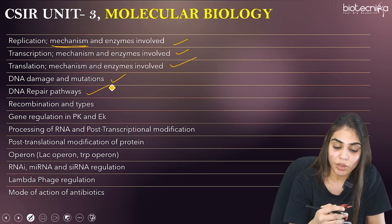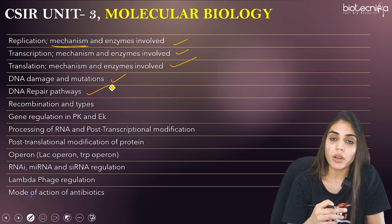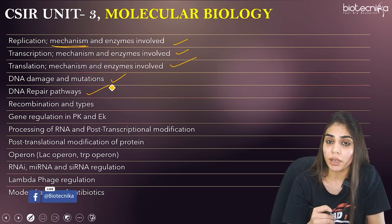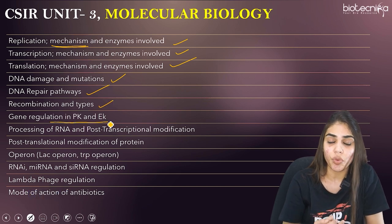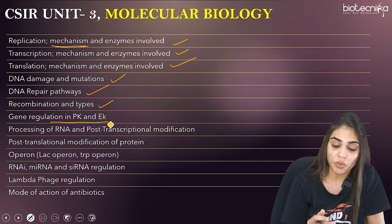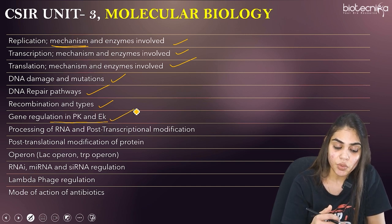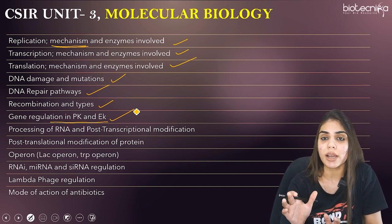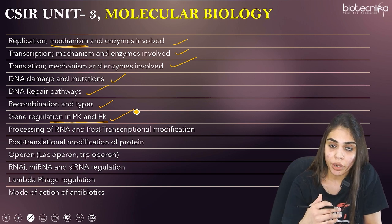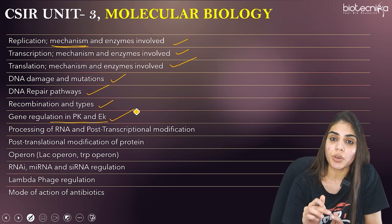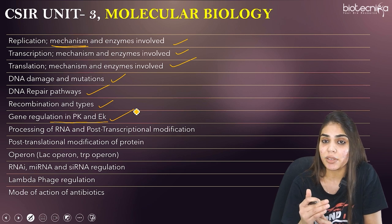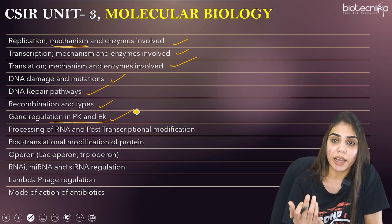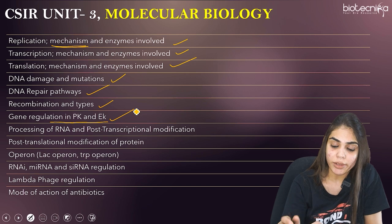You should learn about all three types of DNA damage repair, and also recombination and its types — specifically homologous recombination and site-specific recombination. Gene regulation in prokaryotes as well as eukaryotes is a very important topic. Also learn processing of RNA and post-transcriptional modification — splicing, capping, polyadenylation in mRNA, and how splicing of tRNA takes place.